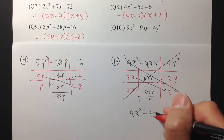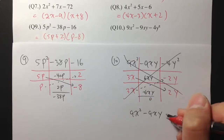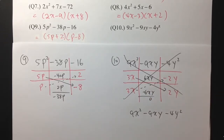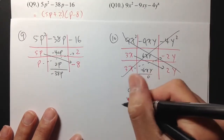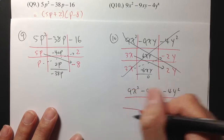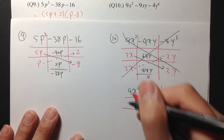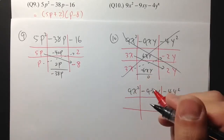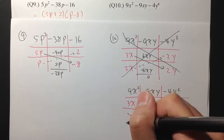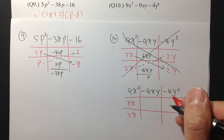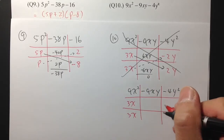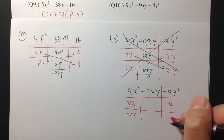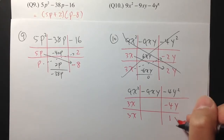9x squared minus 9xy minus 4y squared — let me try another combination. To get 9x squared, I still want to use 3x and 3x. But to get negative 4y squared, let me try it with negative 4 and positive 1, and the y and y.